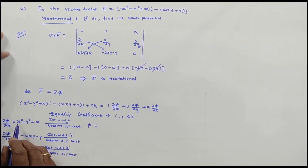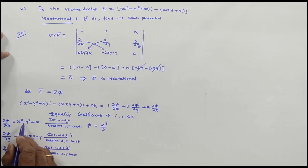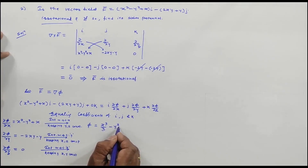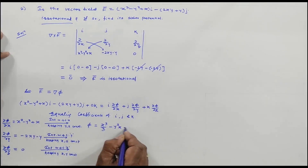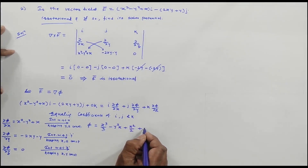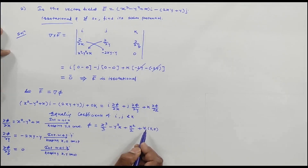Using the shortcut method: we identify common and uncommon terms across the three integrated expressions. The term -xy² appears as a common term in equations 1 and 2. We write the common term once. The uncommon terms are x³/3, x²/2, and -y²/2. This gives us φ directly without needing to find ψ₁, ψ₂, and ψ₃ individually.